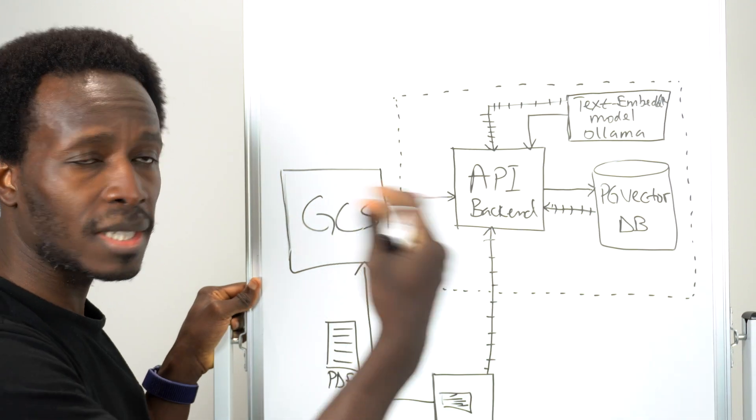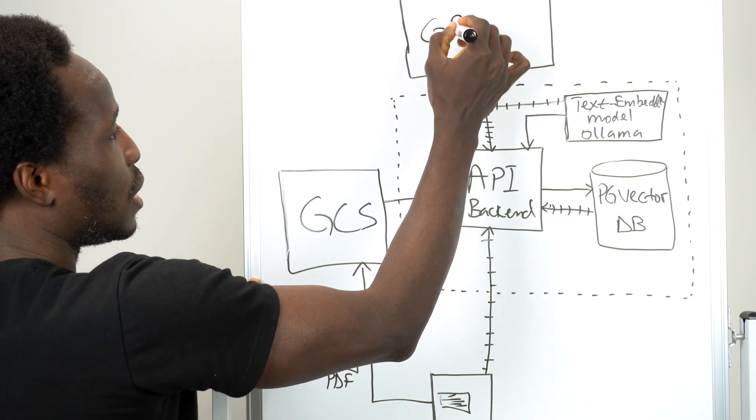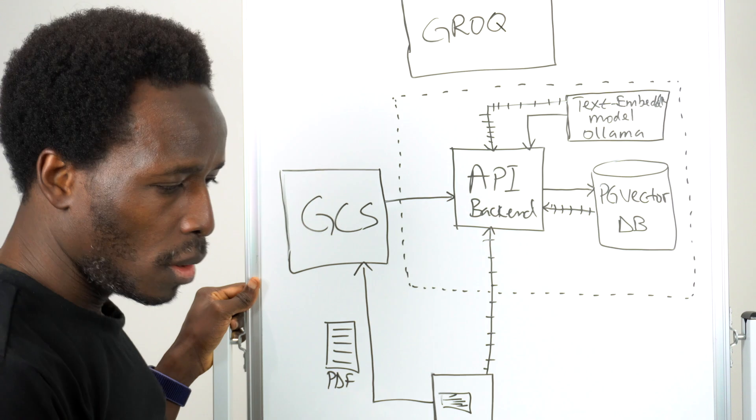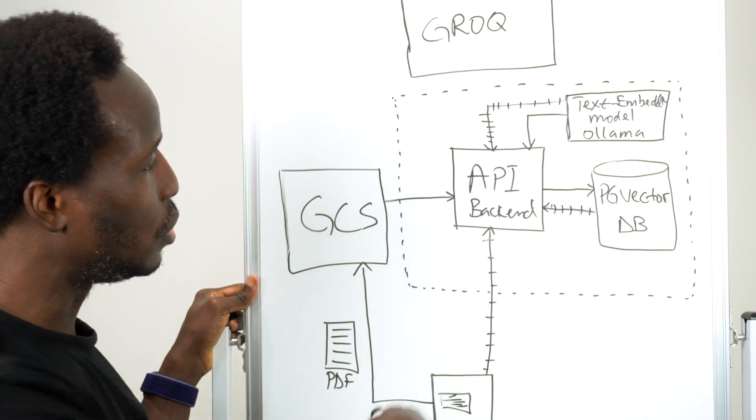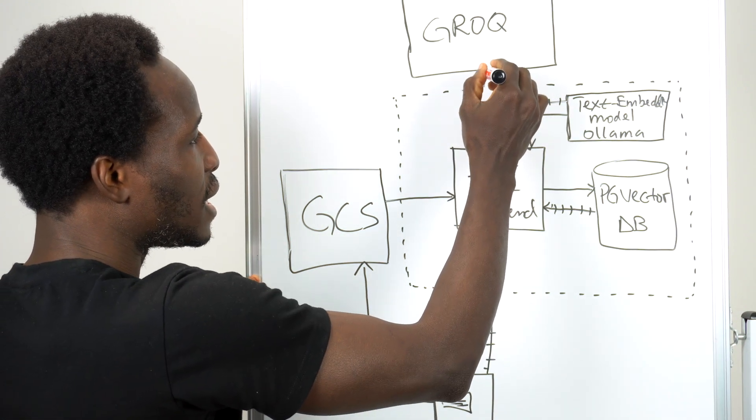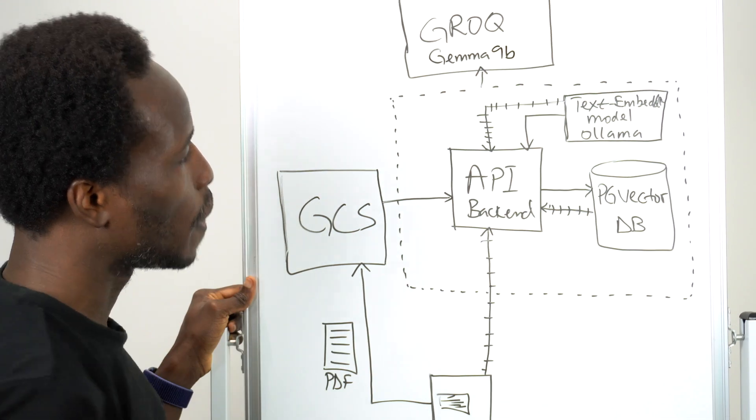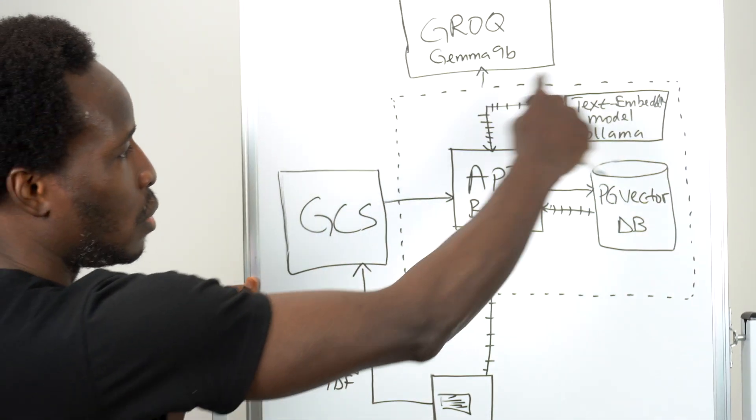Now, in this example, we can use an external model. So we could have models running here. I would say we have a model running in Grok. So let's just say Grok is here. Grok is a service that allows you to have inference. They have multiple AI models, and you can use them to do your inference. So from our own API, once we have the question and the data from the PDF that matches that question in meaning, we take all of that and send it to our AI model. Now, here we could have any kind of model running. So let's say we're using Gemma. Let's say we're using Gemma 9b, for example, as the model, but it's being hosted on Grok, which is external to our own application.